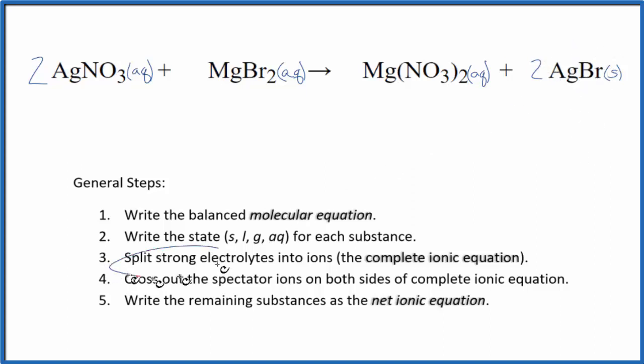Now we can split the strong electrolytes into their ions. This is going to be the complete ionic equation. So silver nitrate, because it's aqueous, it's going to split apart into its ions. Silver is a transition metal, but it's always one plus. That's its ionic charge. So we have two Ag plus.